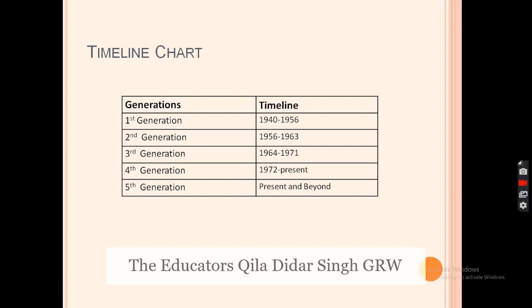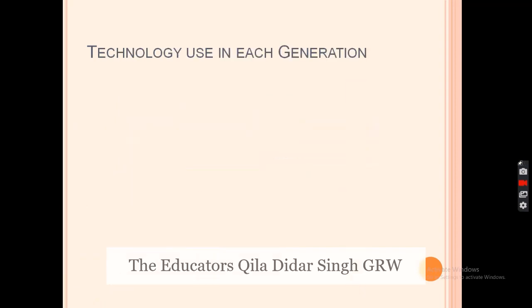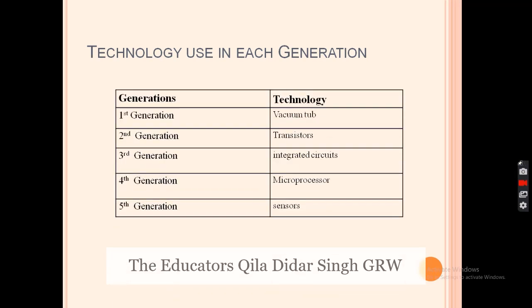Third generation time is 1964 to 1971. Fourth generation computers started in 1972 and are still in use. Fifth generation is present and beyond. The technology used in each generation: first generation used vacuum tubes, second generation used transistors, third generation used integrated circuits, fourth generation used microprocessors, and fifth generation uses sensors and artificial intelligence.